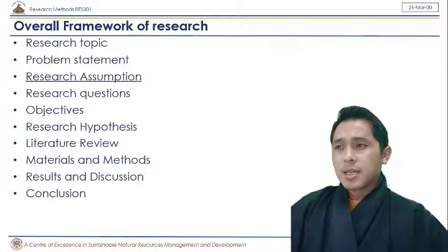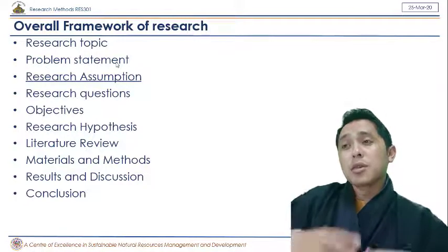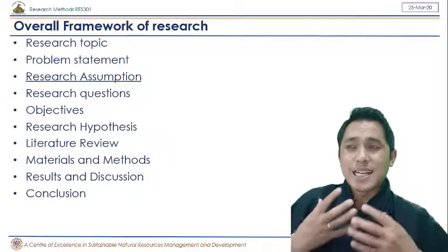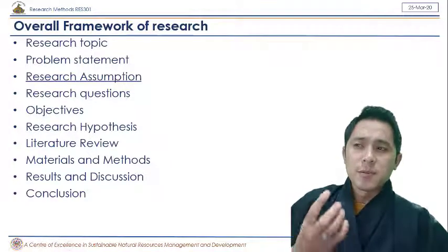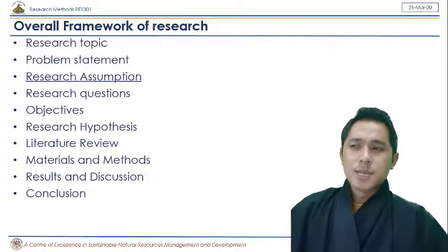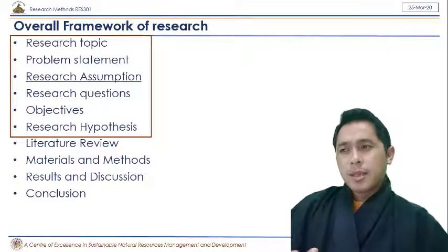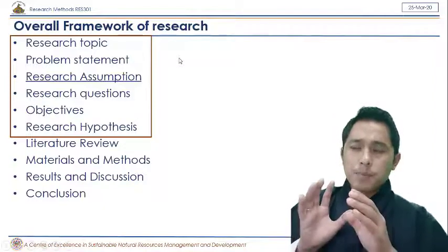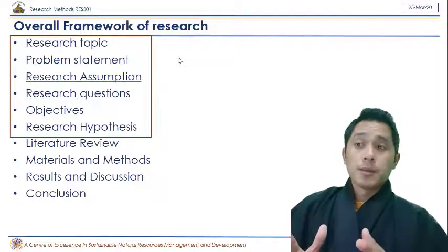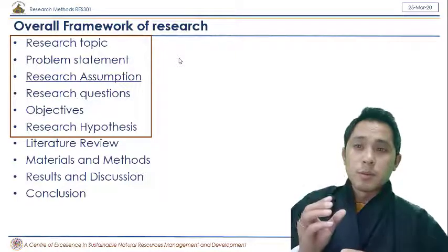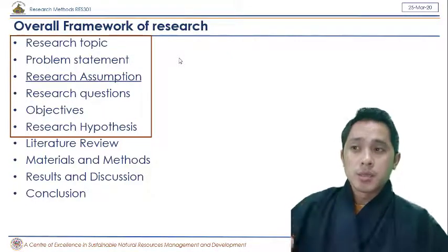The overall skeletal framework starts with choosing a topic, then stating a problem based on which that topic is going to address. Then we have research assumption — what we are exactly assuming when we are starting our research. Then we have research questions, objectives, research hypothesis, and literature review through to the conclusion. The box part shown here is only about 10 to 15 percent of the overall research work, though it's a very small fraction, it has the most important weightage while doing research.